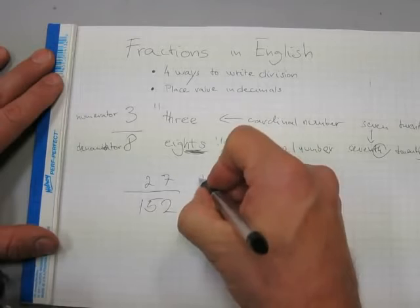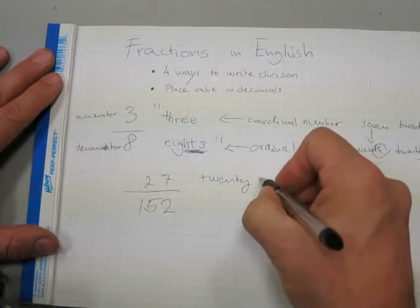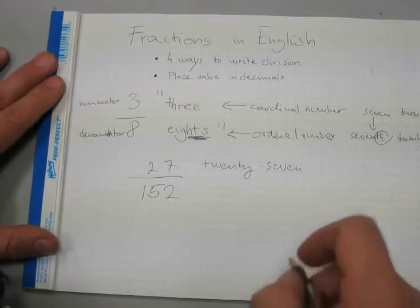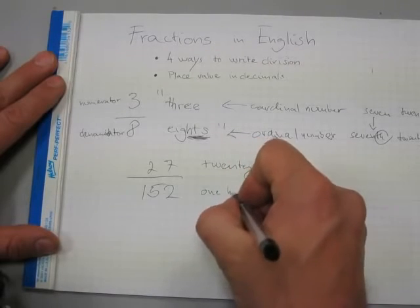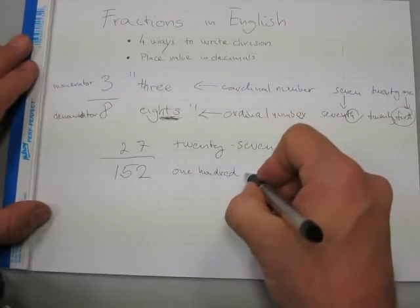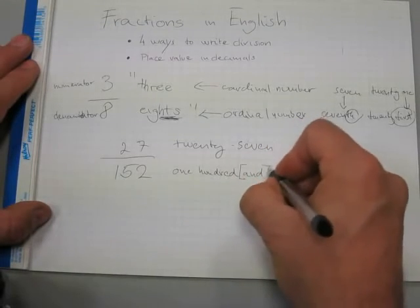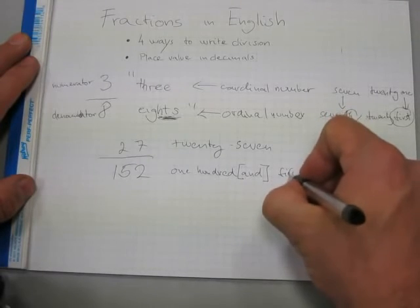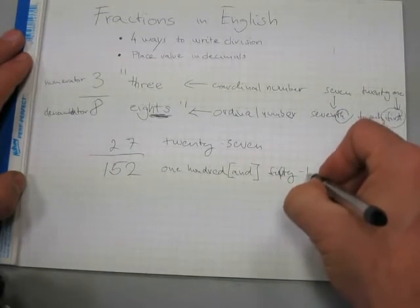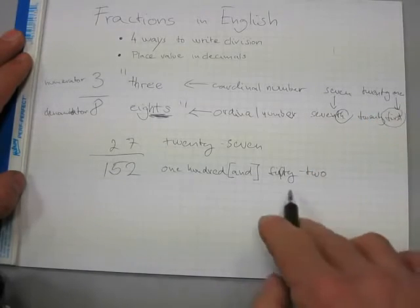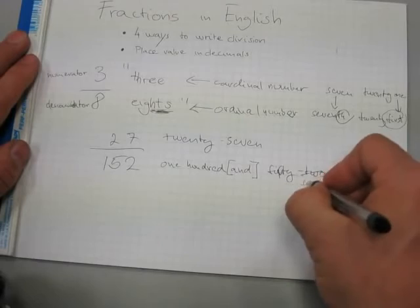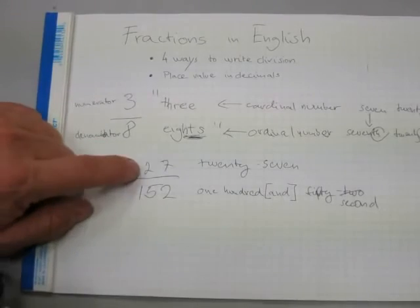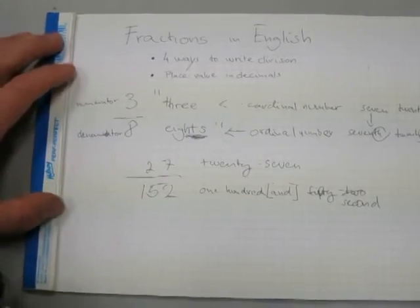And we say 27, the cardinal number for the numerator, and 100 and, that's an extra word in there, 100 and 50. Instead of 152, we say 150 second. So, that's how we read fractions and write fractions. 27, 150 seconds.